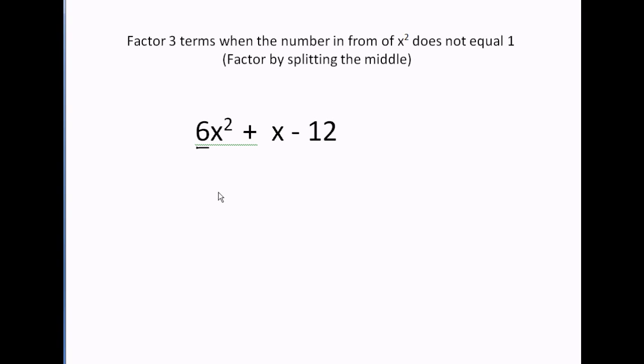Step number one. Multiply the first and last terms. 6 times 12 equals 72. Then give me all the pairs that multiply together to equal 72. 1 times 72 equals 72.